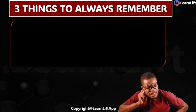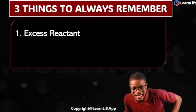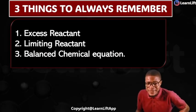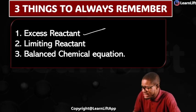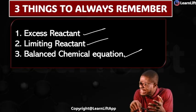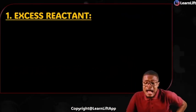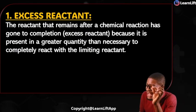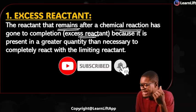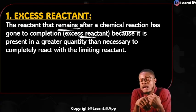To solve Gay-Lussac's Law calculations, there are three powerful things to always remember: number one — excess reactant; number two — limiting reactant; number three — balanced chemical equation. What is the excess reactant? The reactant that remains after a chemical reaction has gone to completion is called the excess reactant.